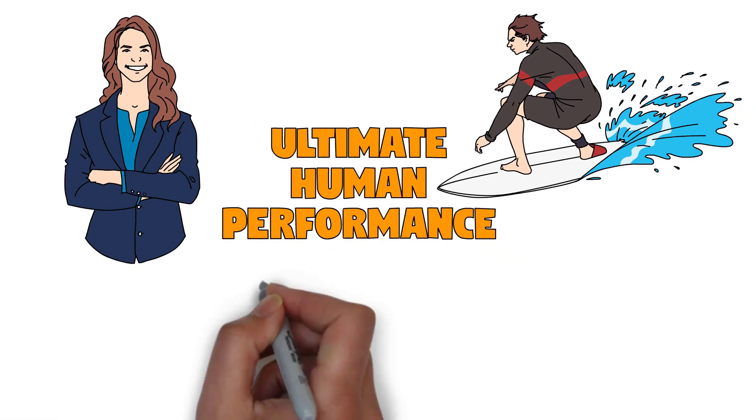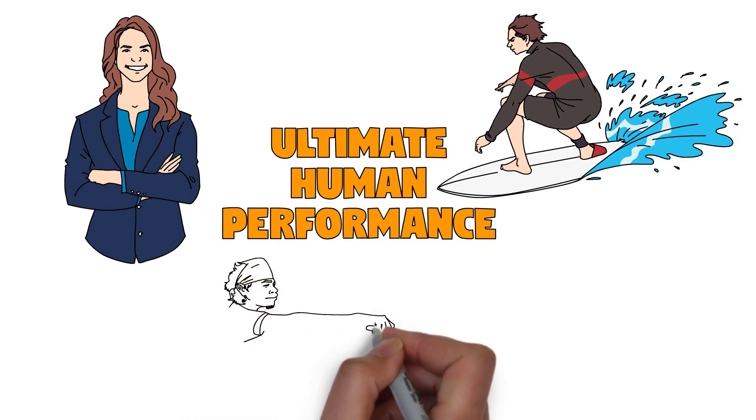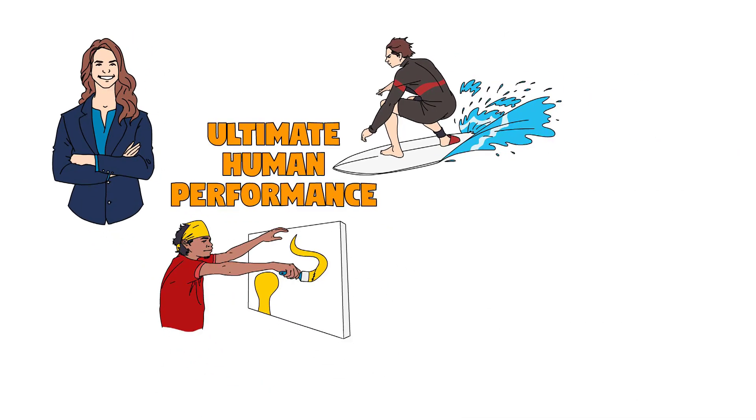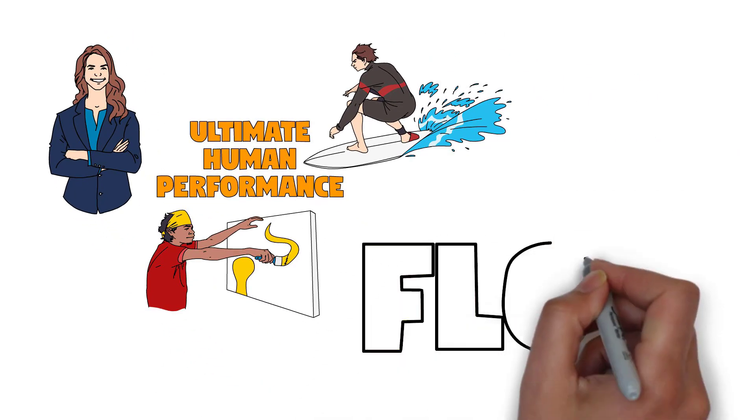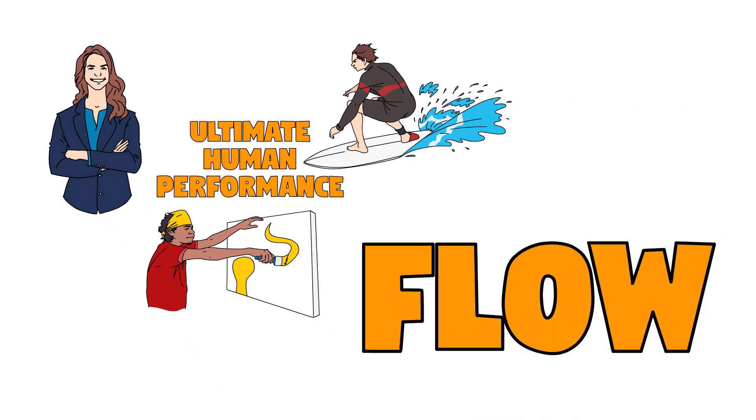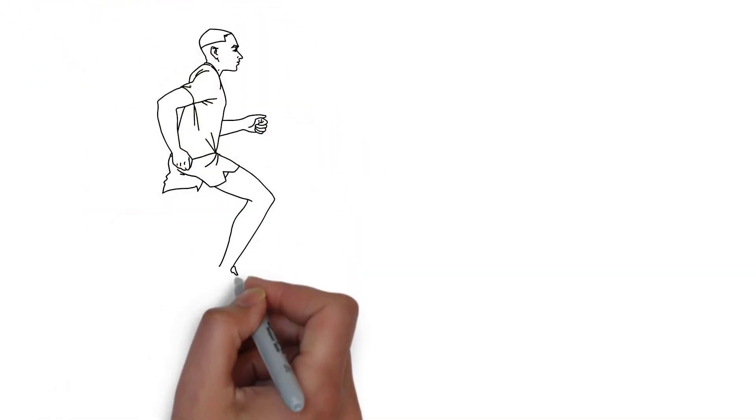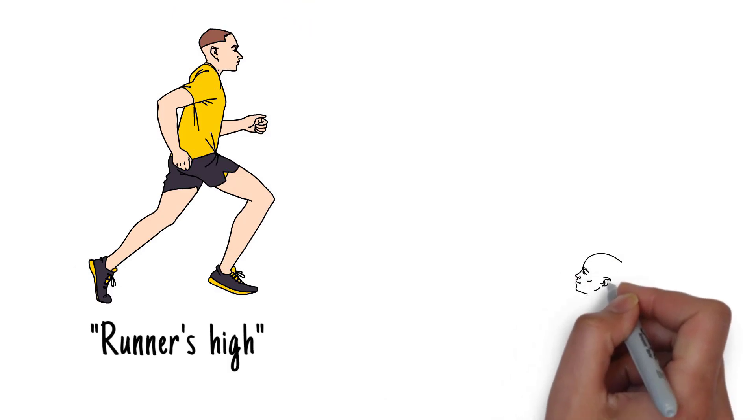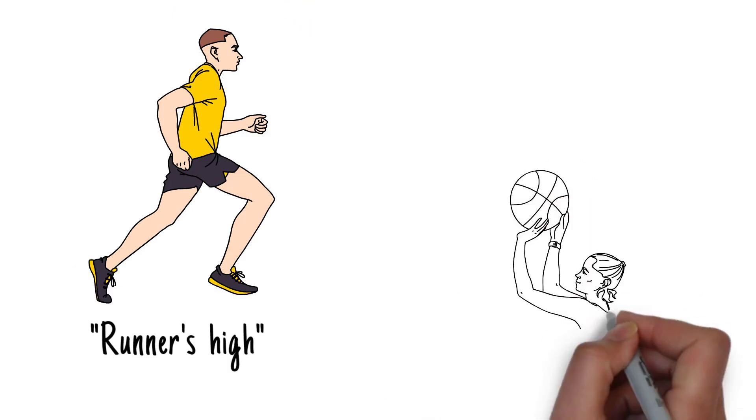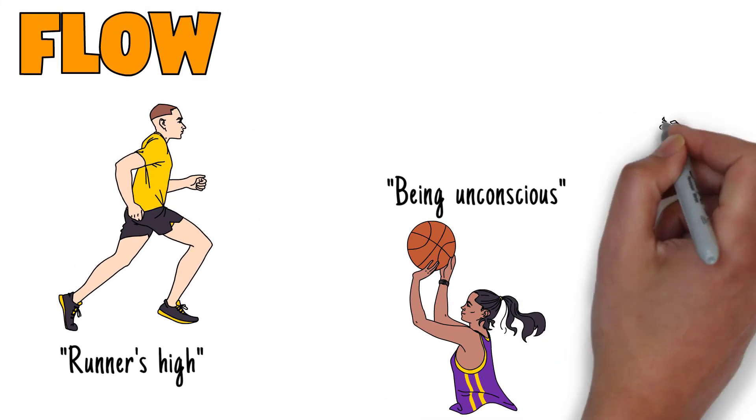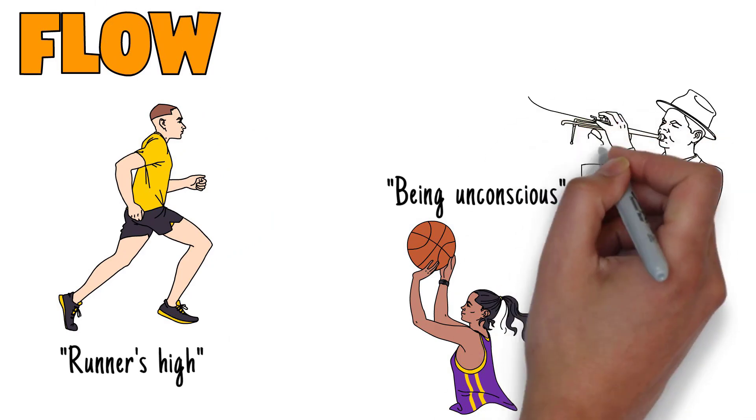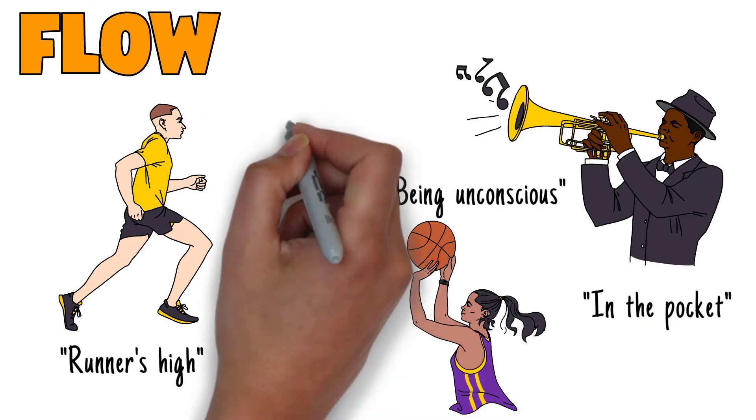You could be talking about action adventure sport athletes, business tycoons, technologists, or artists. It doesn't matter. Every domain where you find ultimate human performance has the exact same signature. It is a state of consciousness known to researchers as flow. You may know flow by other names—runner's high, being in the zone, being unconscious if you play basketball.